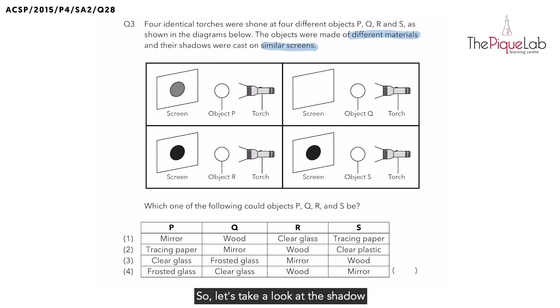Let's take a look at the shadow that was cast by object P. For object P, we notice that there is a shadow that is formed, but what can you say about the shadow? Is it dark or is it faint? It is actually a very faint shadow. So over here we would say that there is a faint shadow observed.